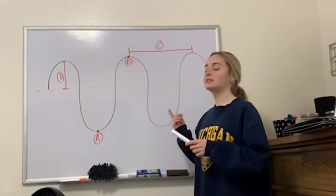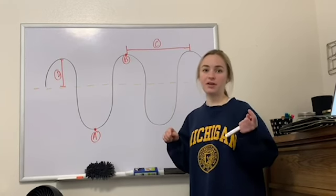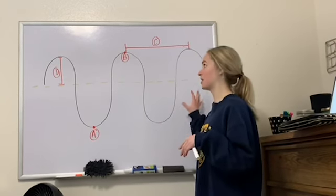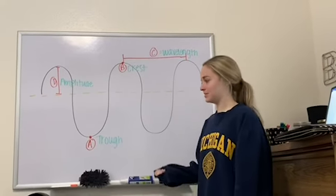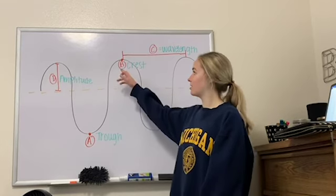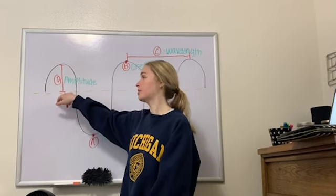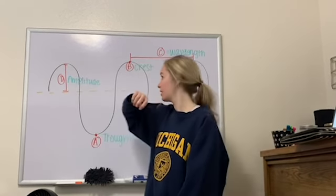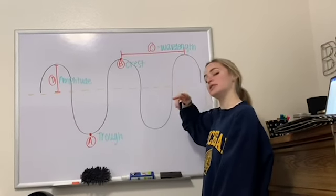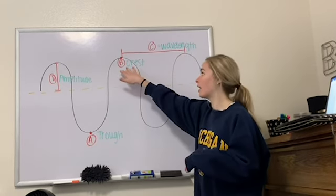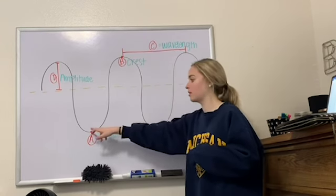Here is a blank wave with labeled characteristics from earlier in the video. Pause this and see if you can name each label. The answers are: trough, crest, amplitude (the distance from the equilibrium to the maximum height of a peak), and wavelength — the distance between two successive identical points, whether crest to crest or trough to trough.